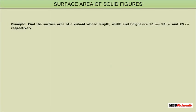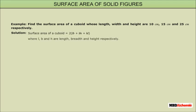Example: Find the surface area of a cuboid whose length, width, and height are 10 cm, 15 cm, and 25 cm respectively. Solution: The surface area of a cuboid is 2(LB + BH + HL), where L, B, and H are the length, breadth, and height of the cuboid respectively. On putting the values of L, B, and H and calculating them, we get the surface area of the cuboid is 1550 cm².